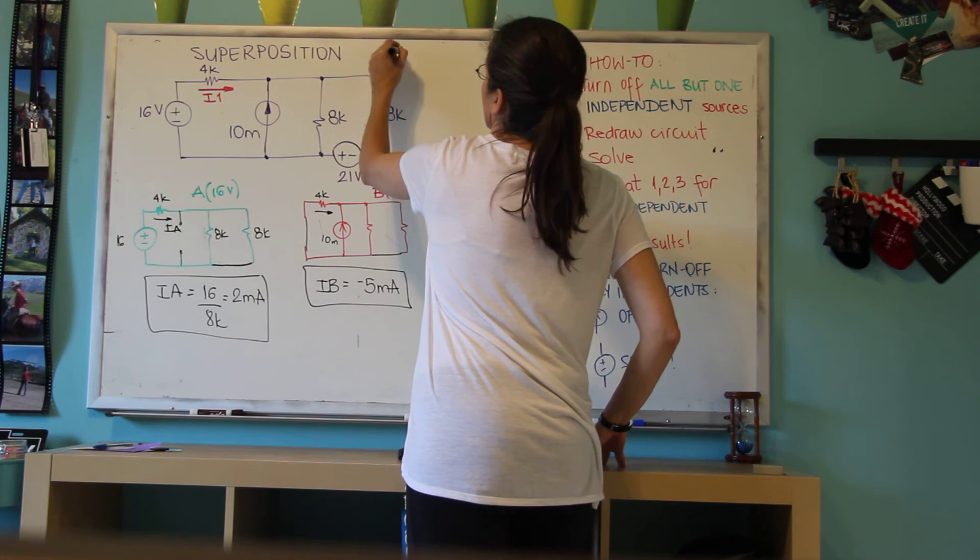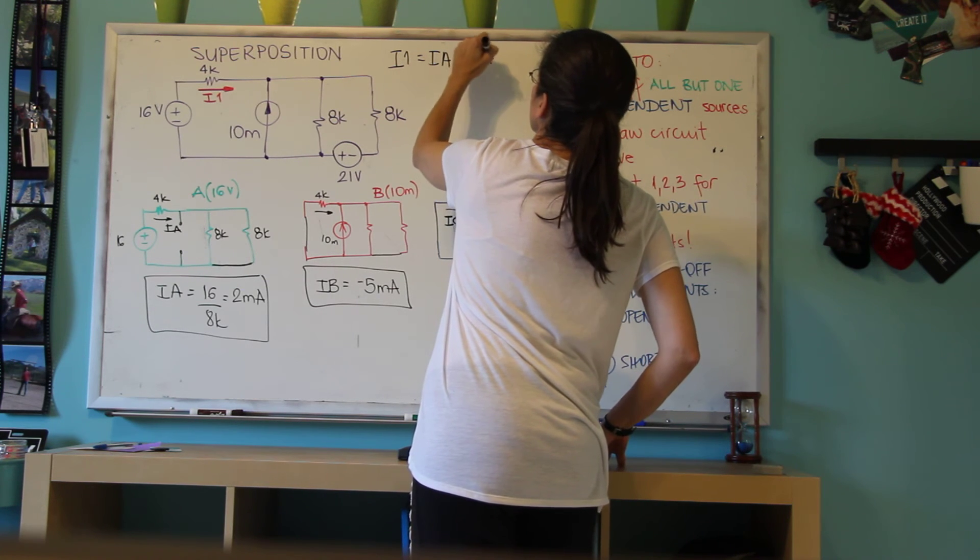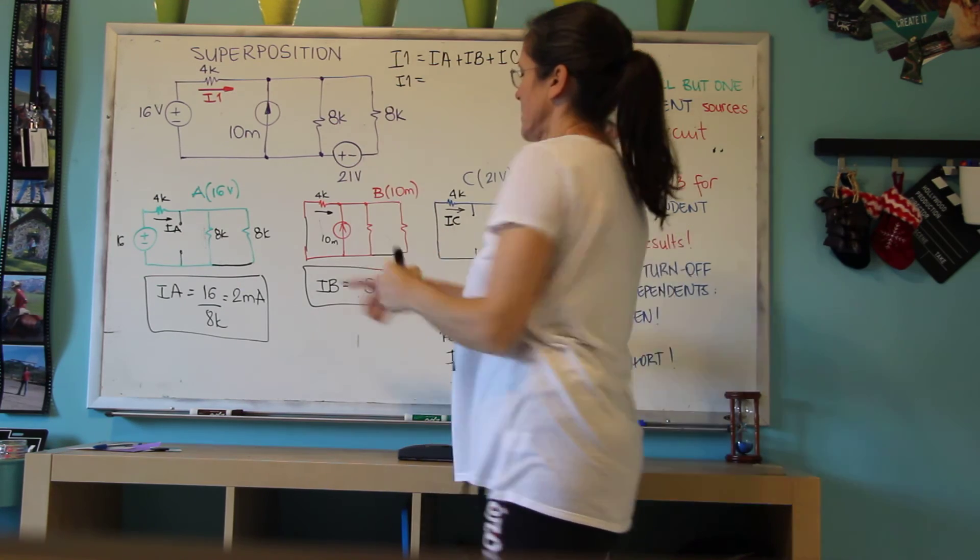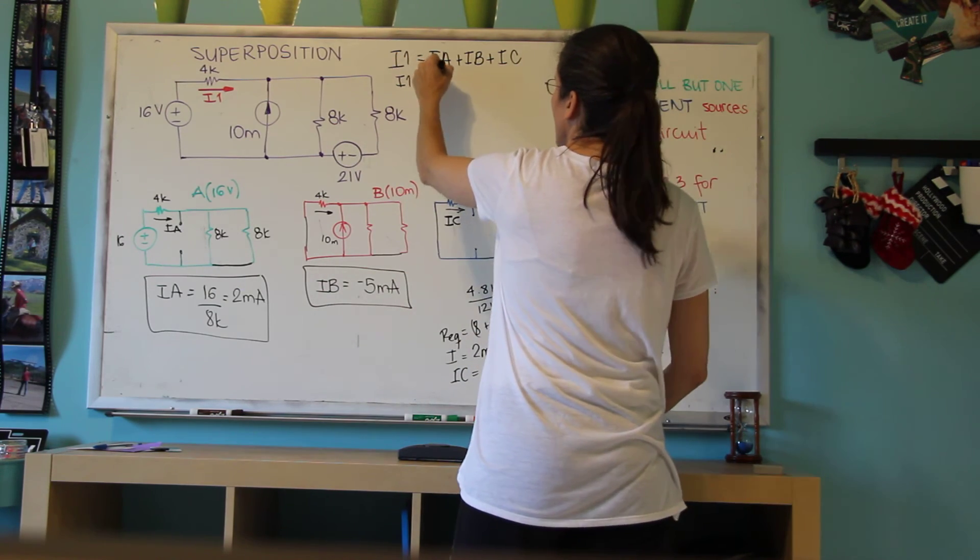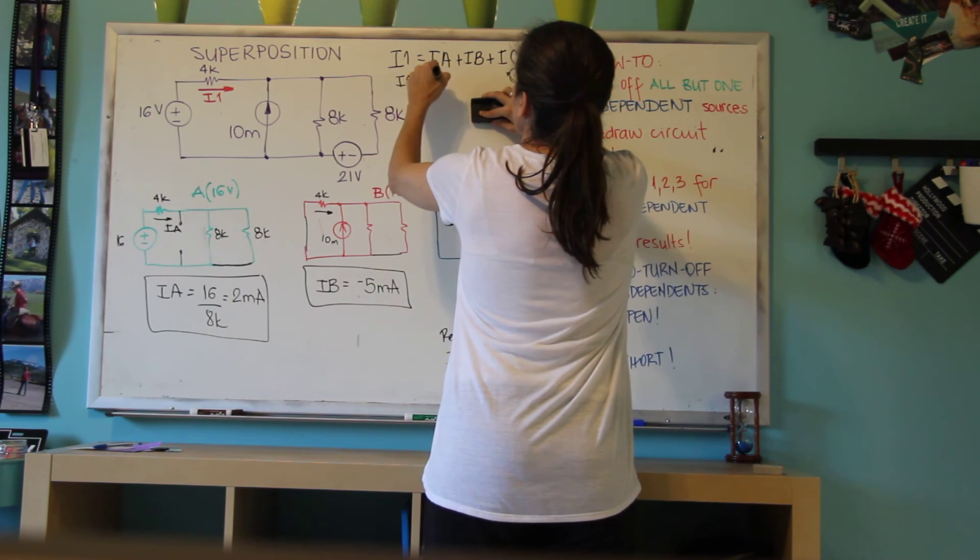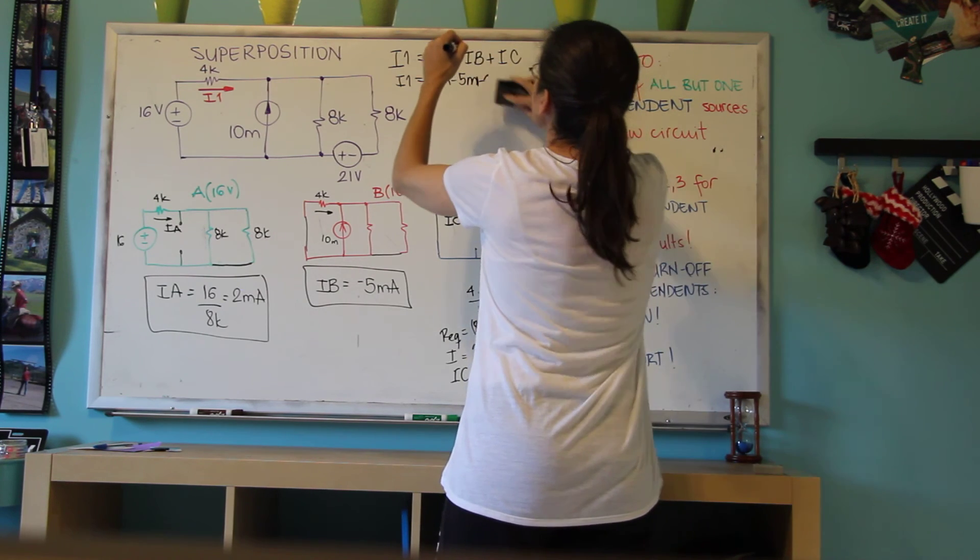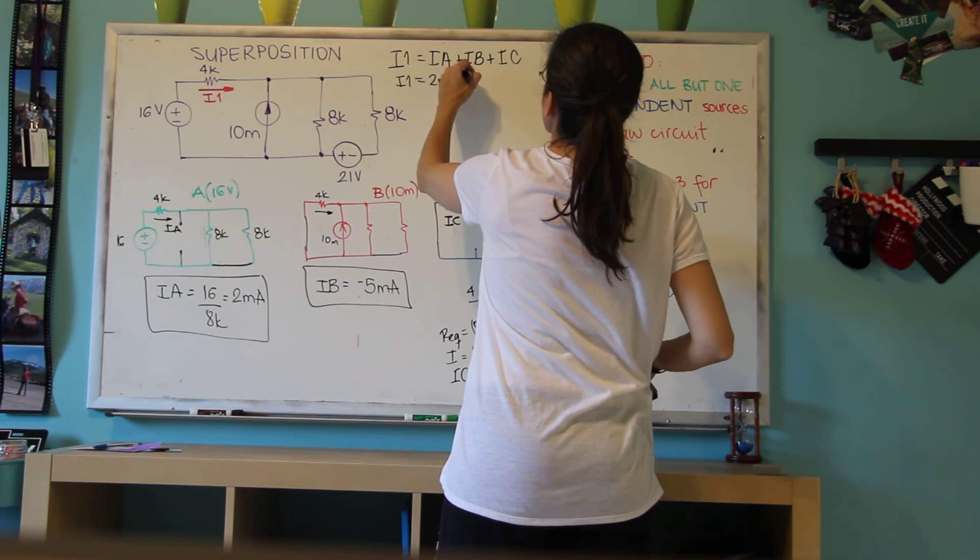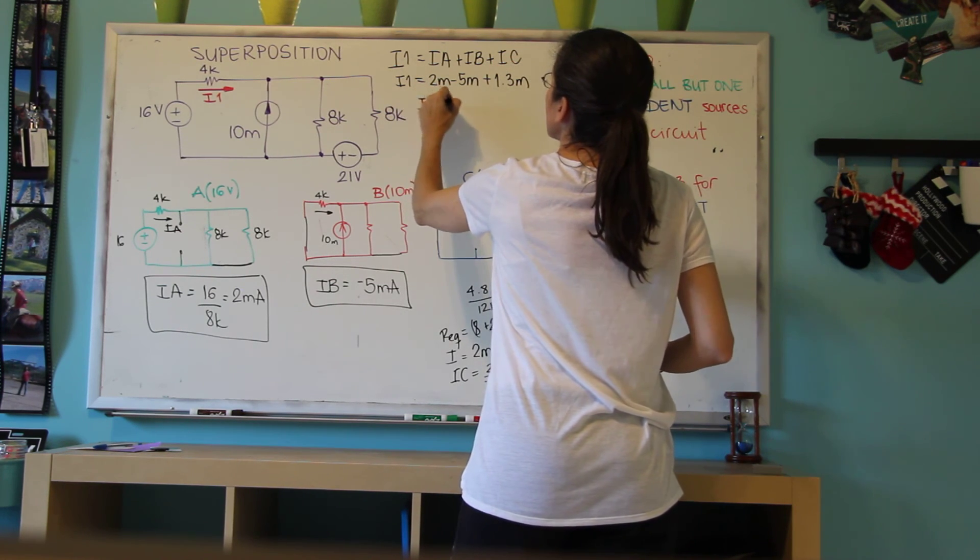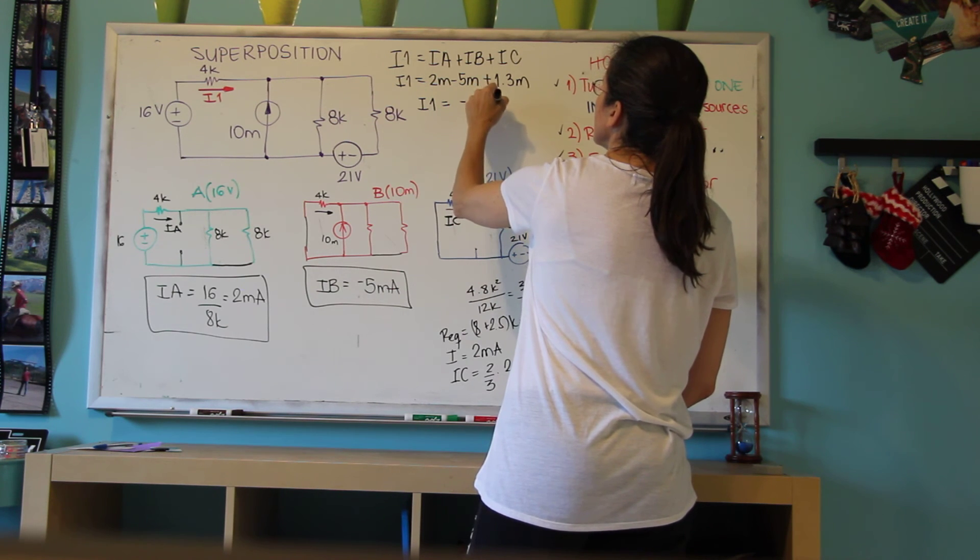So finally, I1 will be IA plus IB plus IC. I1 is 2 minus 5 plus 1.3 milliamps. I1 will be minus 1.7 milliamps.